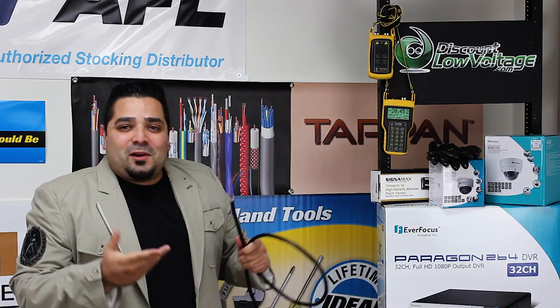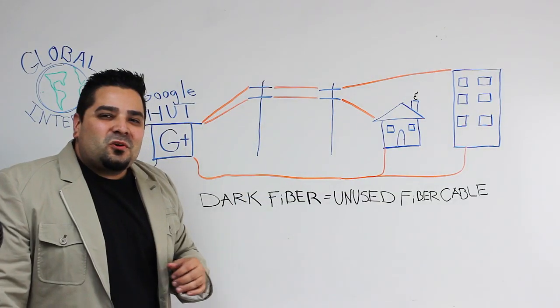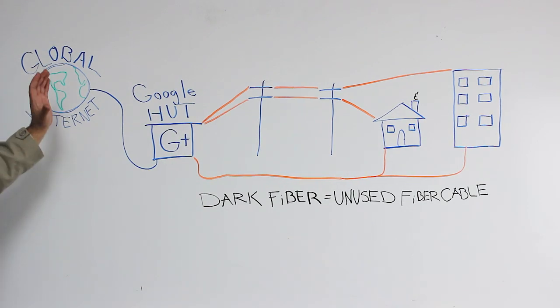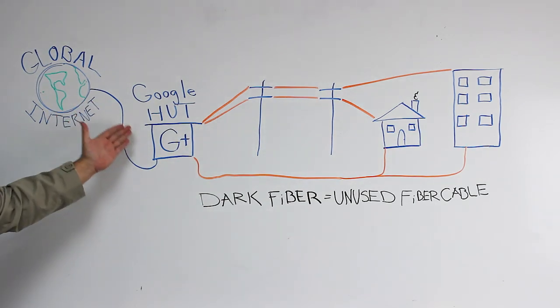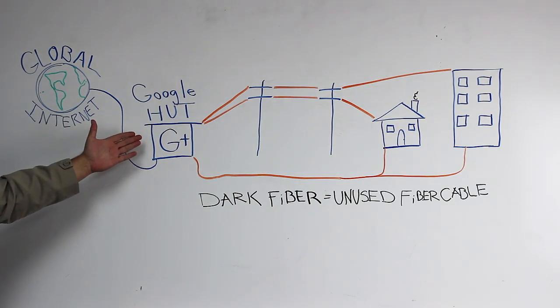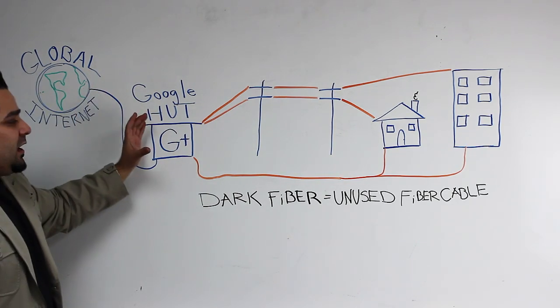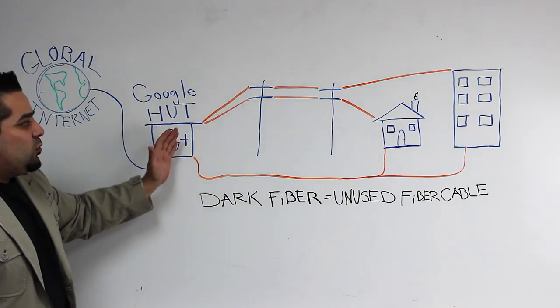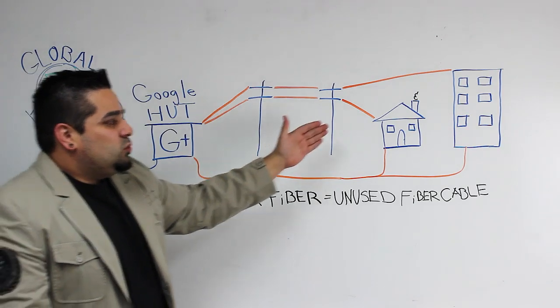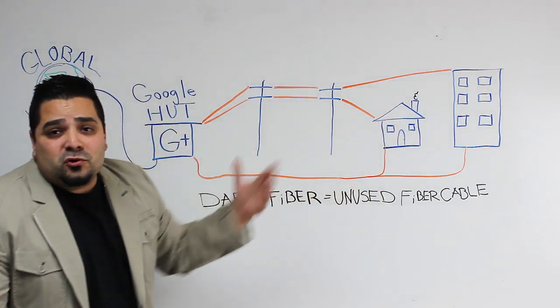Let's talk about Google Fiber for a minute. So let's take a quick look. Here is your global internet and Google right now throughout Kansas City. They've made what they call Google huts. Now they're going to bring the connectivity, the global web, to these huts and then they're running from the hut. They're running the fiber cable on telephone poles or underground to the home or to the commercial applications.